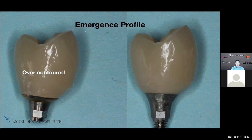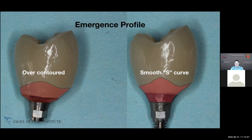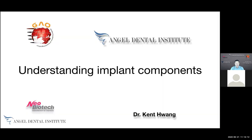Another important concept is emergence profile. I have two images of the exact same tooth — on the left it's over-contoured (highlighted in red), and on the right I've smoothed it to what I call an 'S-curve.' The over-contoured profile puts pressure on the soft tissue; the S-shaped profile allows the tissue to breathe and relax. I call this the 'sexy curve' — but really it's just the S-shape. This significantly affects soft and hard tissue reaction around the implant. You do not want over-pressure on the tissue.